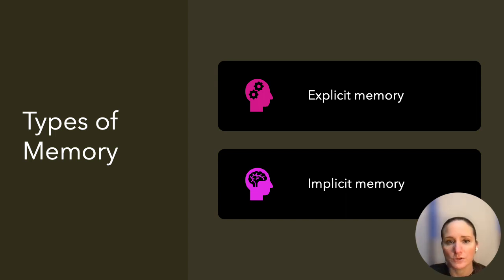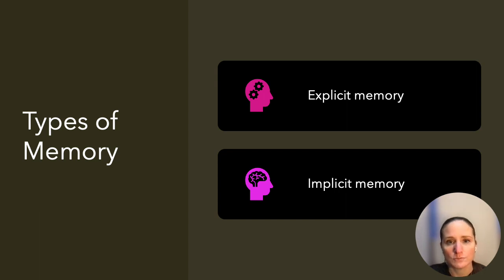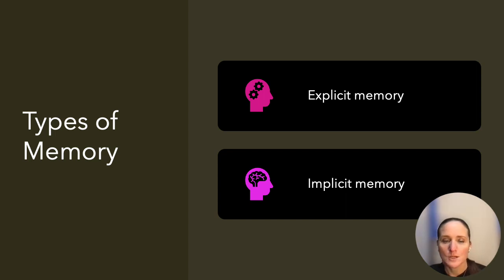Implicit memory is typically non-verbal in nature. This includes motor skills, habits, classical conditioning, priming, and even perceptual learning.